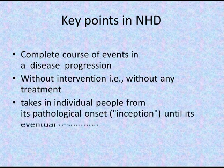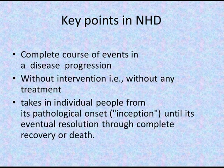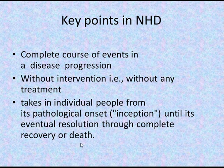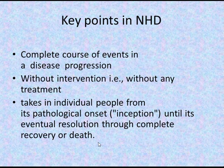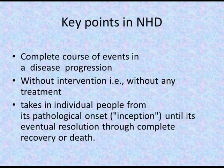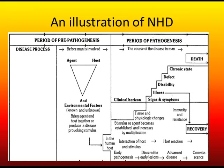The final key point is that natural history takes place in individual people from its pathological onset — the inception — until its eventual resolution through complete recovery or death. From inception to resolution or termination, the entire course of events as it goes on in nature is the natural history of disease. We shall now look into the illustration of the natural history of disease, which has been divided into two phases.